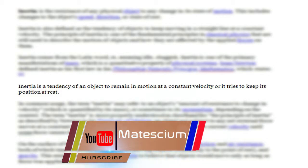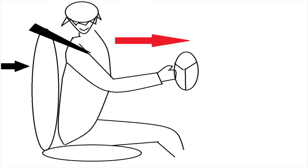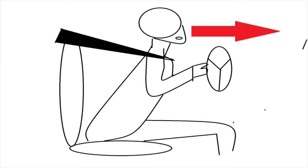Inertia is the tendency of an object to remain in motion at a constant velocity or at a rest position. You feel this inertia every day in your life. For example, when someone is sitting in a moving car, they keep moving forward even when the car stops suddenly. This is called inertia of motion.